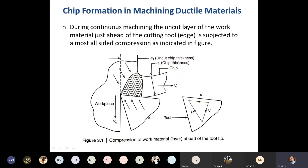There is another compressive force due to the work material, since the work material tends to move downwards — because of that there will also be a compressive force. Because of compressive forces from the cutting tool and the work material, we get almost all-sided compression. Material will be removed in the form of chips layer by layer — this is an indication of one layer.